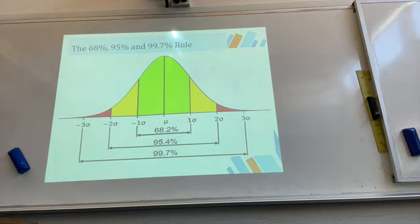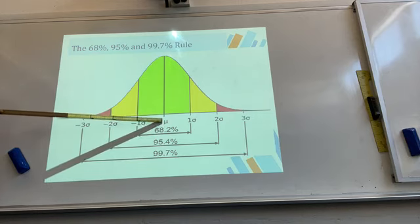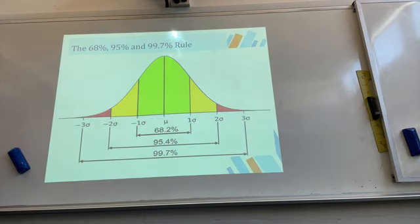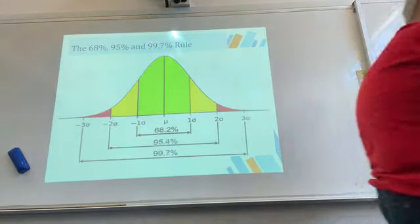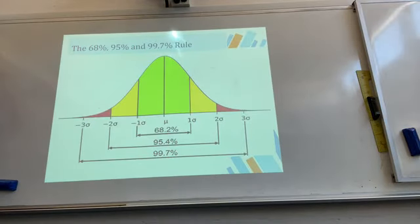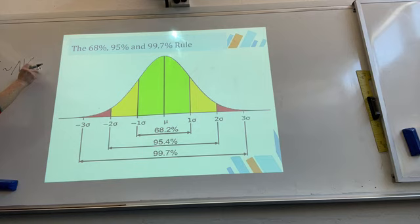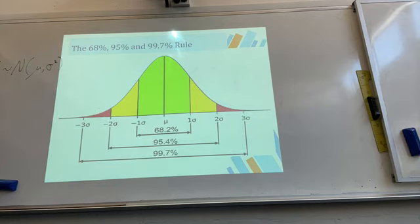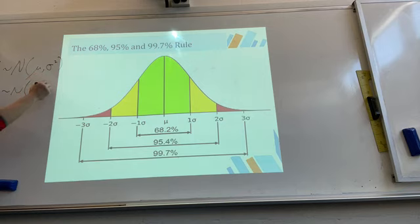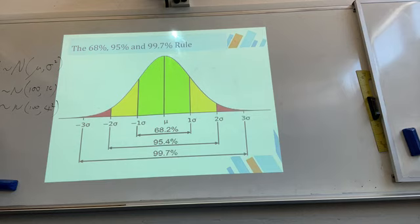The mean can be standardized into a z-score. For the standard normal distribution, the mean is zero and sigma is one. If you're using actual data, X is written as N(mu, sigma²). For example, N(100, 16) means the mean is 100 and the standard deviation is 4. The standardized score Z has mean zero and standard deviation one.